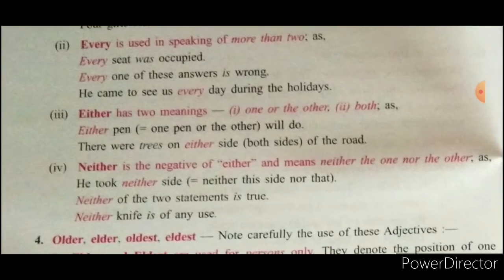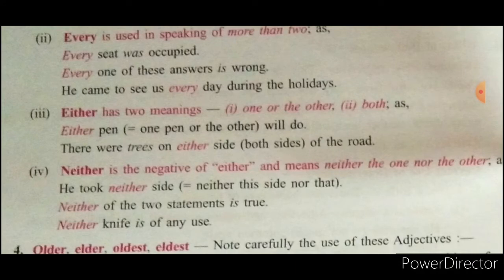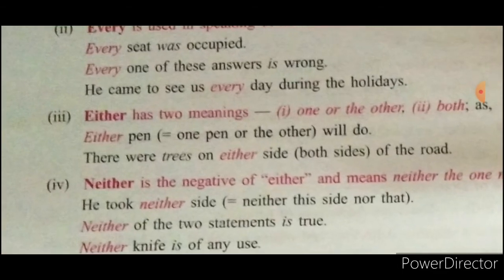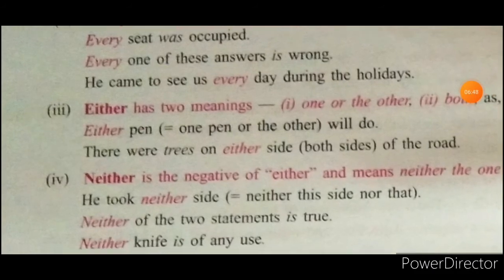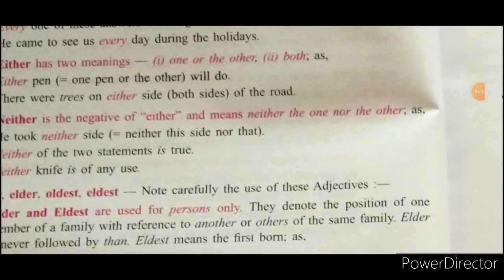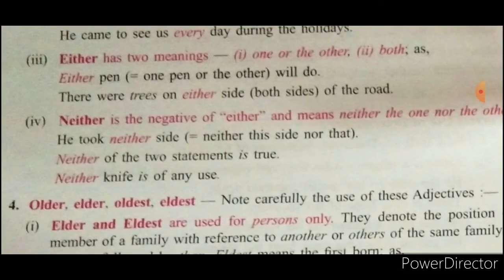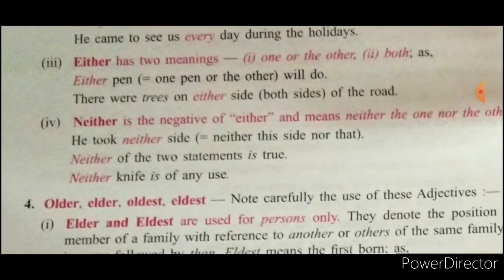Either has two meanings: 'one or the other' and 'both.' 'Either pen' means one pen or the other will do. 'There were trees on either side' means both sides. Neither is the negative of either and means 'neither the one nor the other.' 'He took neither.' 'Neither side' — neither this side nor that. 'Neither of the two statements is true' — none of the two.